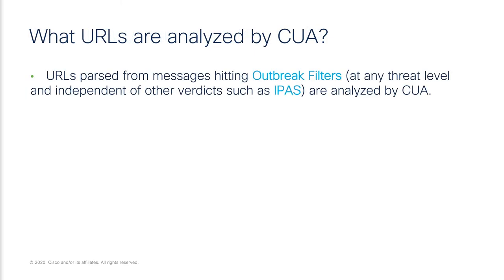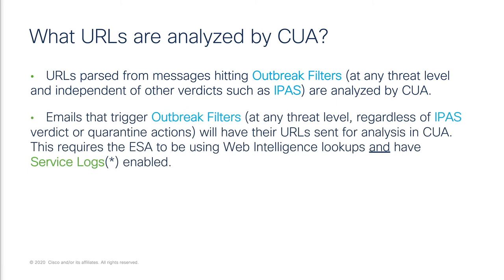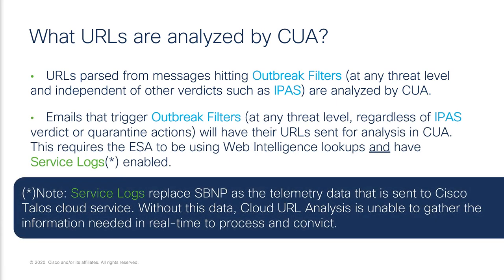When a customer's ESA receives an email that triggers outbreak filters, URLs associated with that email are routed to Kua for out-of-band analysis, where the URL is passed through an escalating level of intelligence generation. At the end of this process, if there is enough information to positively affirm the URL contains a threat, the URL is added to Talos' intelligence database and subsequent reputation lookups from the field will receive this new intelligence. Cloud URL analysis uses service logs generated from customers for telemetry to identify URLs which are good candidates for additional screening.